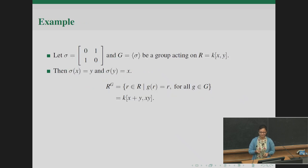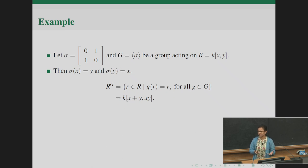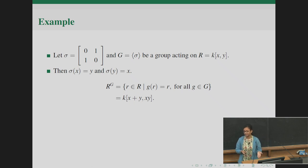Let's start with a small example so that we can see things clearly. We have a small 2×2 matrix σ acting on a polynomial ring in two variables — it is simply permuting the variables. Once the permutation happens it's easy to check that x+y and xy are two obvious invariant elements, and one can prove that the invariant ring is actually the algebra generated by these two elements, in particular a polynomial ring.